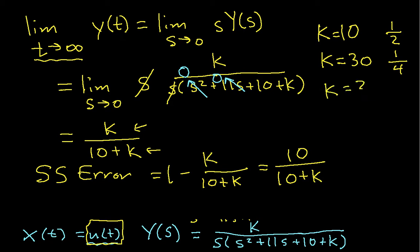K equal to 200, if I really want to get that steady state error small, then my steady state error will be 0.05, 1 over 20.